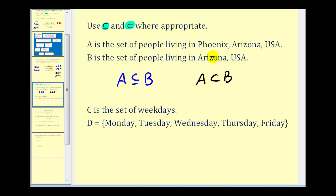And since being a proper subset gives us more information about the two sets, the proper subset notation would be more appropriate, even though they are both true. Looking at our second example, C is the set of weekdays, and D is the set Monday, Tuesday, Wednesday, Thursday, and Friday. So these two sets are actually equal to each other. So we could say that C is a subset of D, and D is also a subset of C. But since they're equal, we cannot use the proper subset notation. So this would be the best notation to use in this situation.